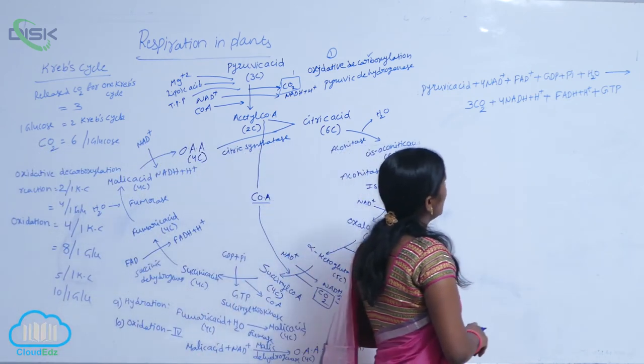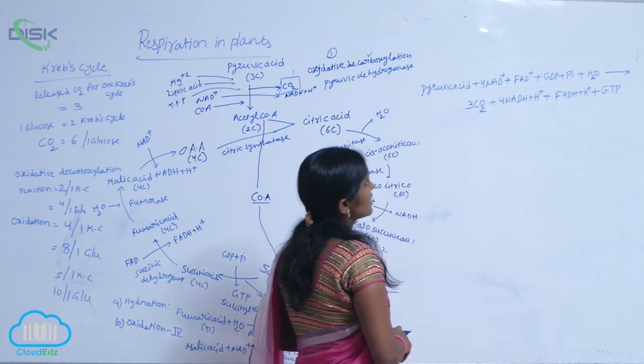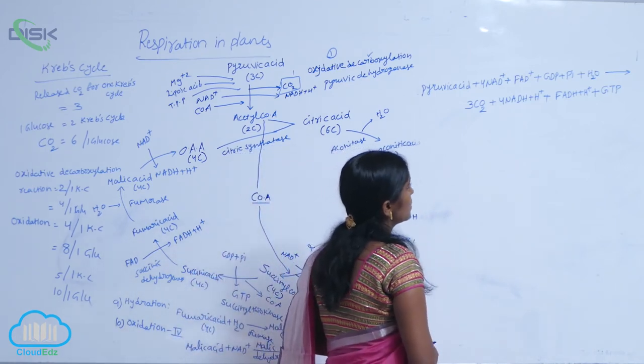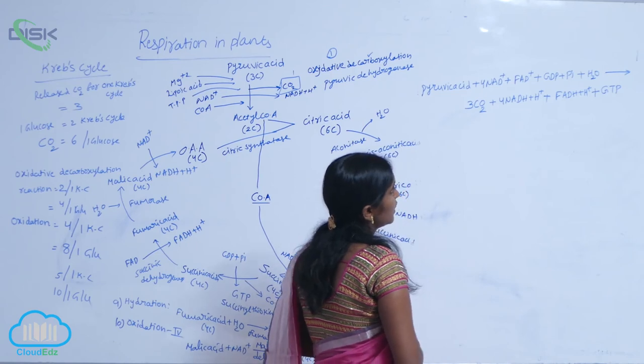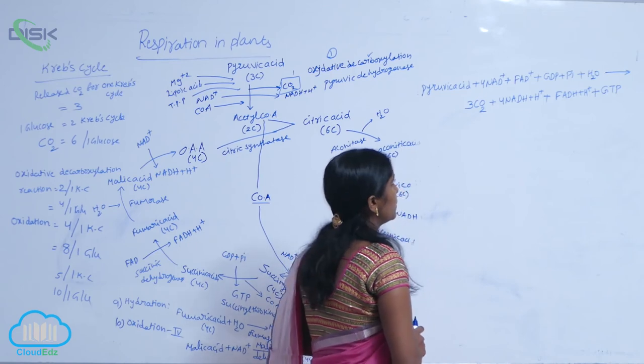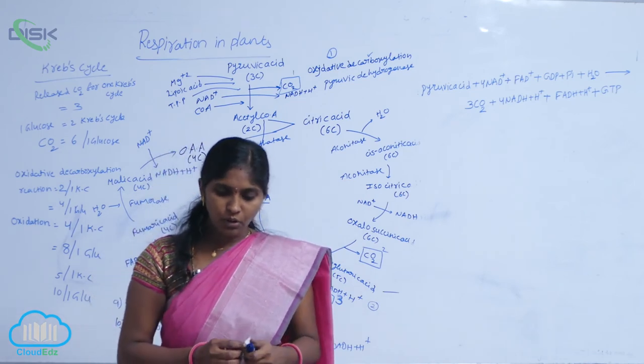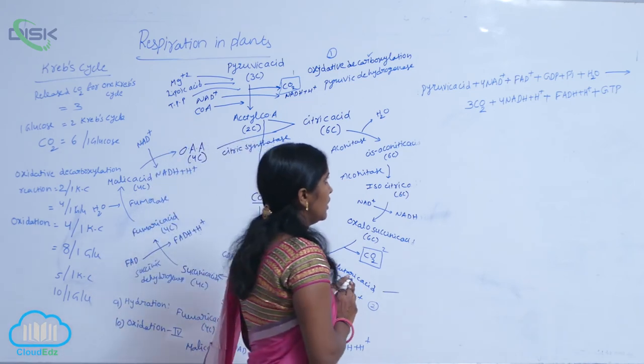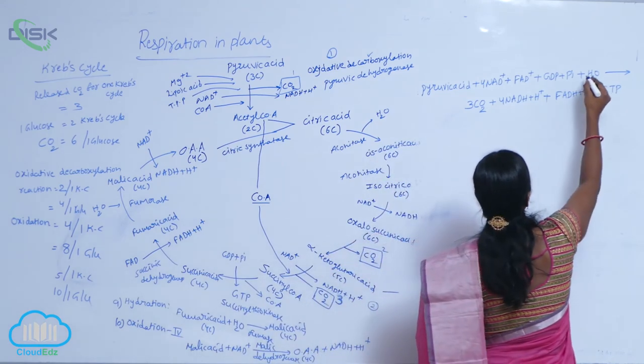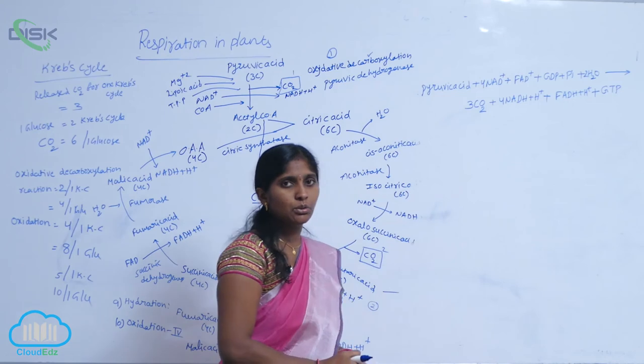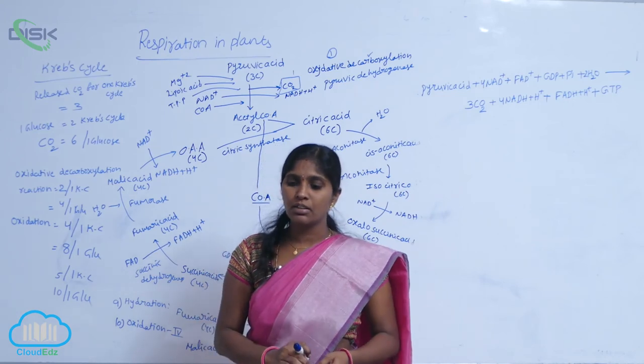Pyruvic acid, 4 NAD+ coenzymes and 1 FAD+ coenzyme, GDP molecule and inorganic phosphate and water molecules. How many water molecules are needed here? 2 water molecules are added here and that results in 3 carbon dioxide molecules,